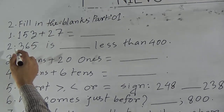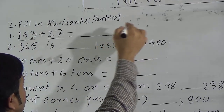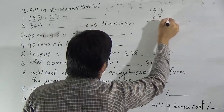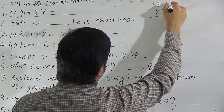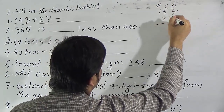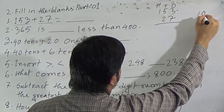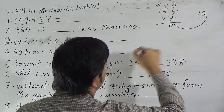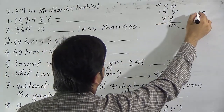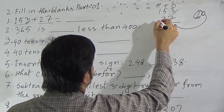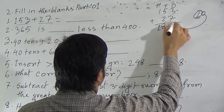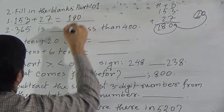Question 1: 153 plus 27. We have to add 153 and 27. We start from the ones place. Adding 3 and 7 gives 10, so we write 0 in ones place and carry 1. Then 5 plus 2 is 7, plus the carried 1 gives 8. There is no digit in hundreds place of 27, so we write 1. The answer is 180.